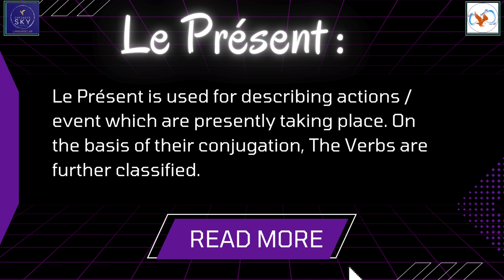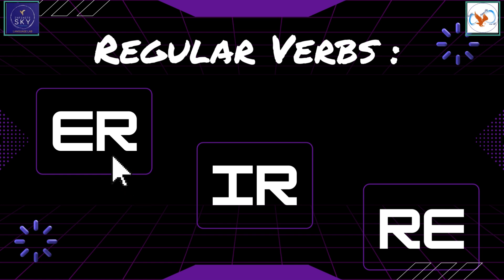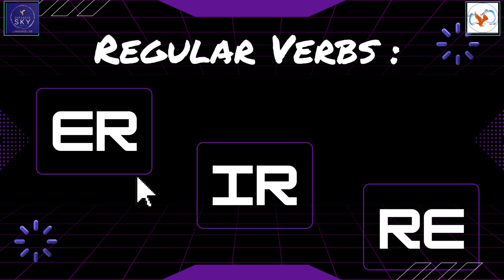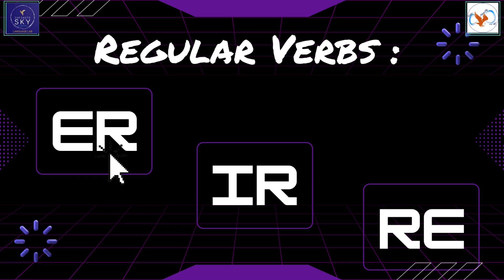For example, je mange means 'I eat' or 'I am eating.' French verbs are categorized into three main groups based on their infinitive endings: ER, IR and RE. Each group has its own set of rules for conjugation, which we will explore in this video.